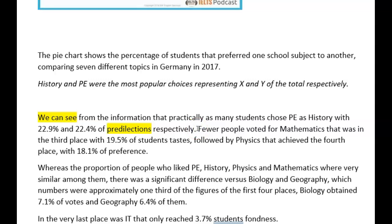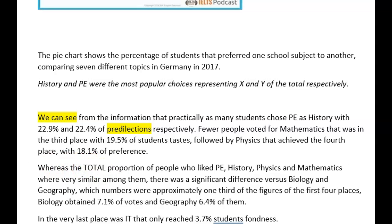Fewer people, which was ranked in third place with 19.5%, closely followed by physics in fourth place with 18.1. That's a really nice overview of the whole thing. I think you've really grouped this very, very well. So the total proportion — or overall proportion — of people who like PE, history, physics and maths were very similar.